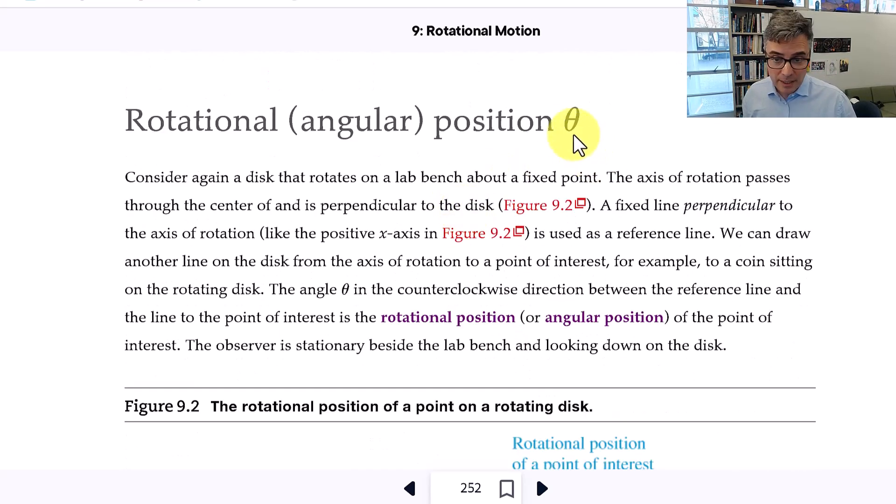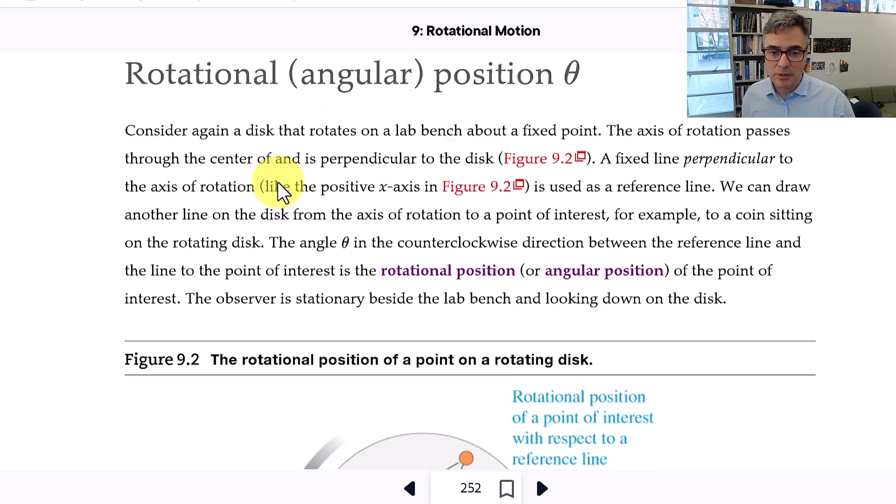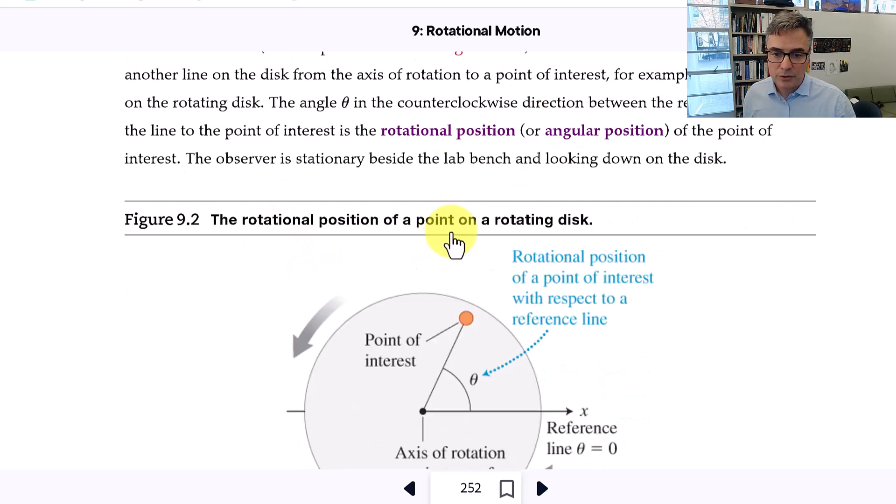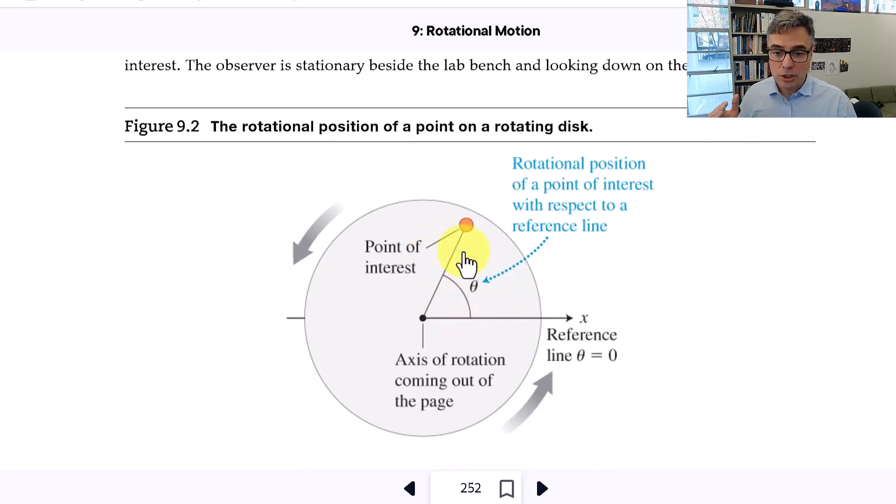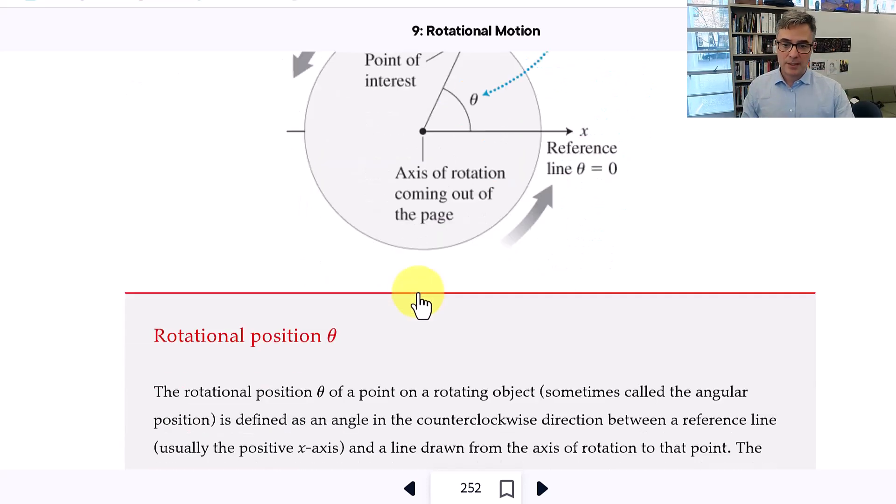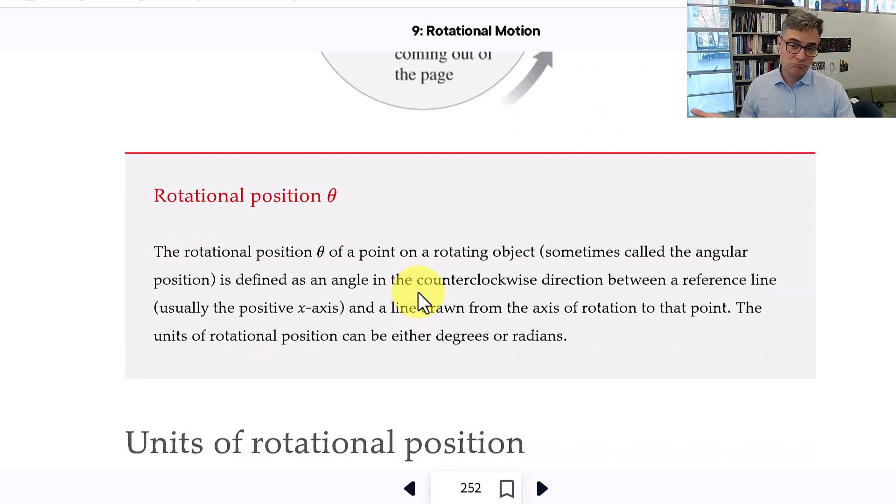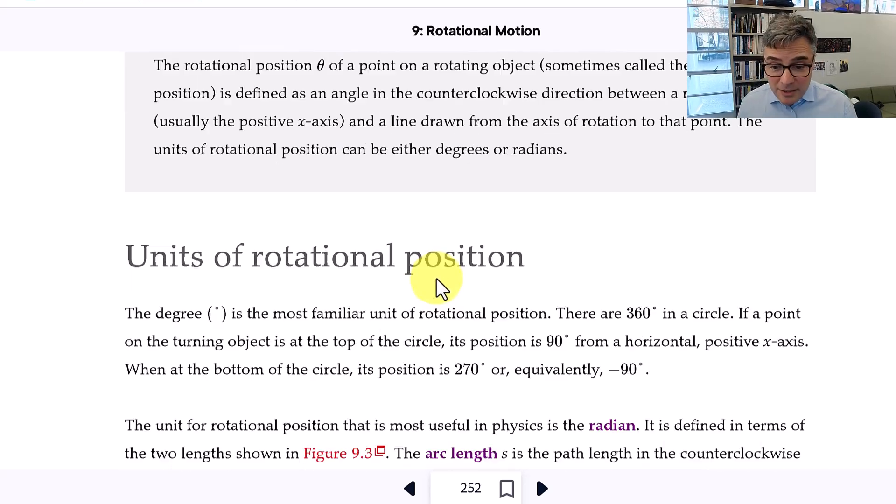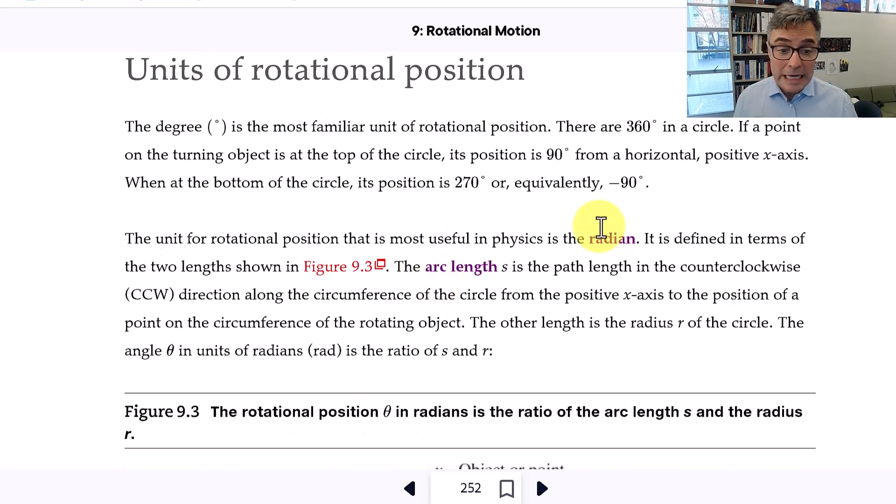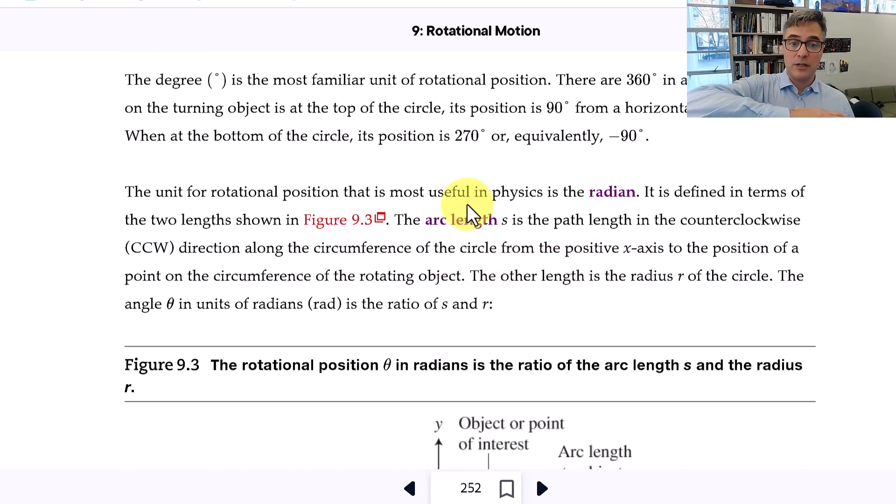The first is theta, which is the rotational or angular position. Sometimes I call it angular, sometimes I call it rotational. So let's call it rotational. The rotational position is this angle theta as measured counterclockwise from the x-axis. So there it is, the units. It turns out to be radians. A radian is defined so that if you go 360 degrees around, that's 2 pi radians.